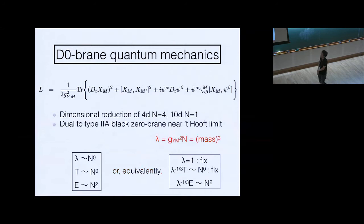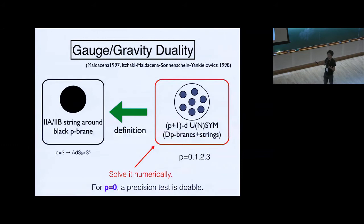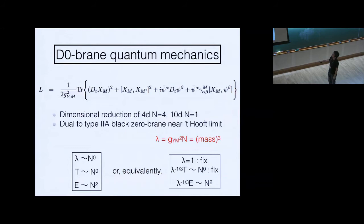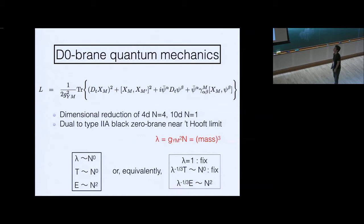But first, let me show you the result — I will spend three slots explaining how to get it. In this case, the gauge theory is zero-plus-one-dimensional super-Yang-Mills, so there is no space — it's just quantum mechanics, not even quantum field theory. The Lagrangian is given by this: we have nine N-by-N bosonic matrices and 16 N-by-N fermionic matrices. Formally, this is a dimensional reduction of 4D N=4 super-Yang-Mills, or equivalently a dimensional reduction of 10-dimensional N=1 super-Yang-Mills to 0+1 dimensions.